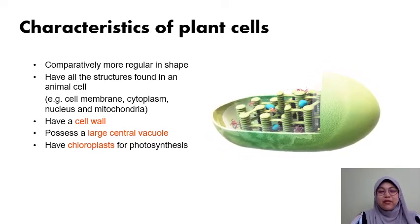In terms of organelles and structures found inside the animal cell, that would be the same. But of course you would have chloroplast for photosynthesis whilst animal cells do not. And typically plant cells also have a large central vacuole.